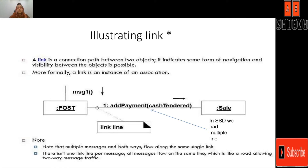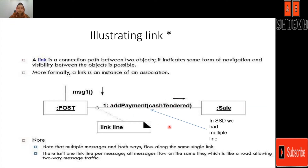How we can illustrate a link in the UML collaboration diagram, or in other words the communication diagram. Here I have two instances — one for post and the other one is called sale. These are non-named instances. I have a link between them. The link's direction is shown by this arrow, and the link has a method call — add payment, cash standard — and one is the sequence number. A link is a connection path between two objects. It indicates some form of navigation or visibility between objects is possible. More formally, a link is an instance of an association. That means the object of the post class can call a method add payment of the sale class by passing it a parameter of cash tender.